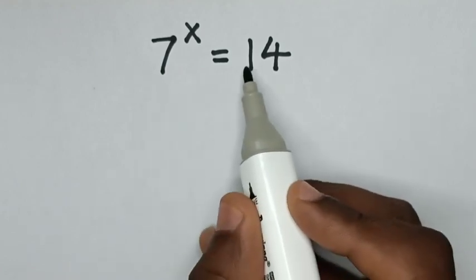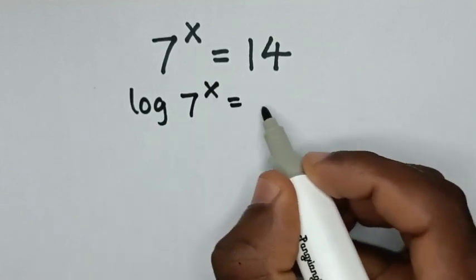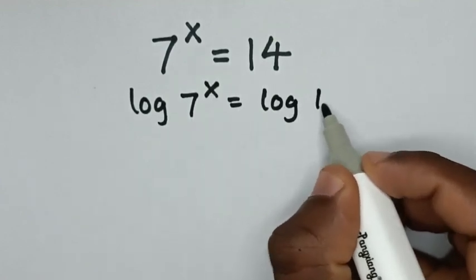First, we apply log to both sides. So it will be log of 7 to the power of x equals log of 14.